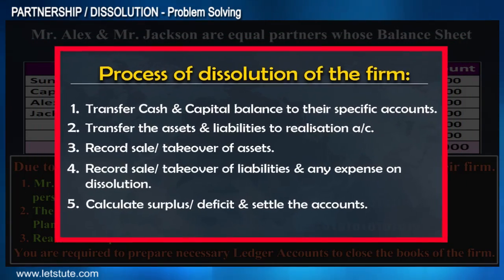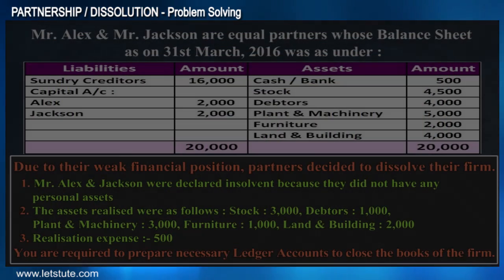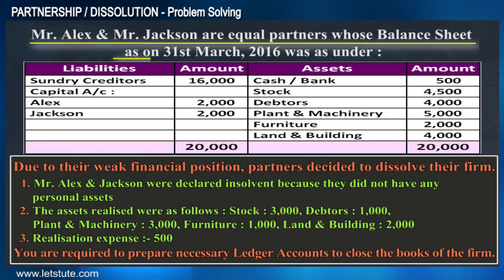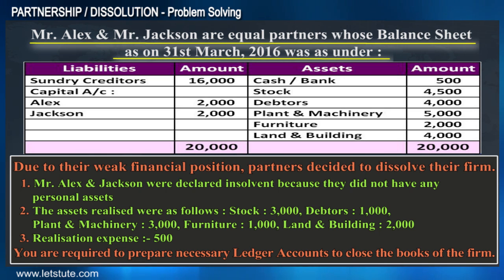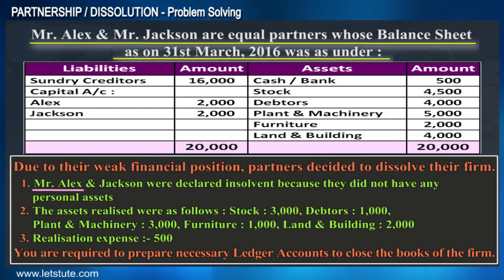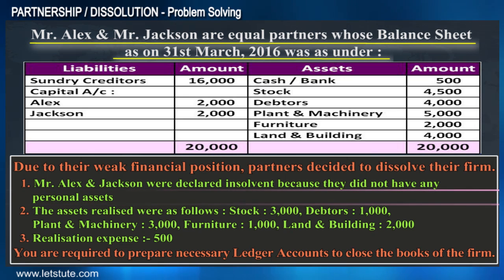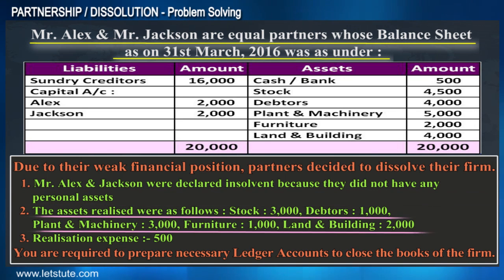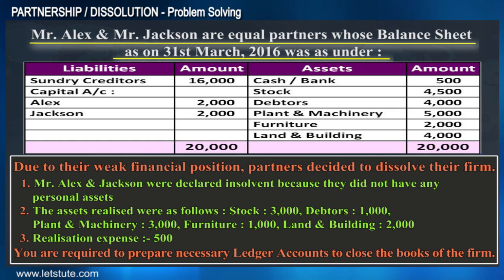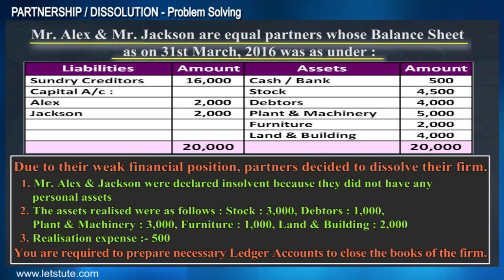First, let's read through the question carefully. Mr. Alex and Mr. Jackson are equal partners whose balance sheet as on 31st March 2016 was as follows. Due to their weak financial position, the partners decided to dissolve their firm. Mr. Alex and Mr. Jackson were declared insolvent. The assets realized are listed and we are required to prepare the necessary ledger accounts to close the books of the firm.